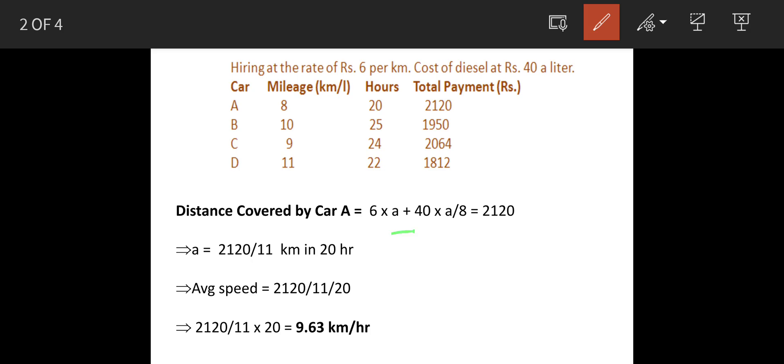Let's say distance covered by car A is A kilometers. So the total payment made to car A is 2120. This is equal to 6 into A, that is 6 rupees per kilometer into distance, plus cost of diesel, that is 40 into A upon 8. 40 into total distance covered divided by 8, and 8 is mileage in kilometer per liter.